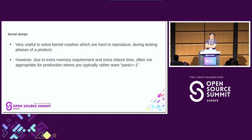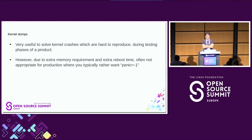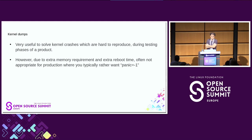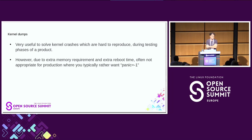Kernel dumps are very useful to solve kernel crashes which are hard to reproduce and during testing phases of your product. Due to extra memory requirements and extra reboot time, they are mostly not appropriate for production, where you typically want to reboot as soon as possible after a kernel panic — using something like panic=-1 as a command line parameter.